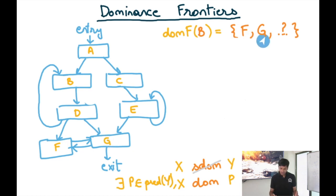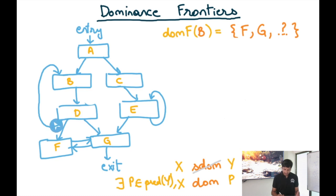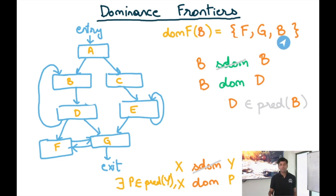Similarly, G is in the dominance frontier of B because there's a path to G from entry that does not go through B, so G is not strictly dominated by B, but its predecessor D is dominated by B. There's also one more node in the dominance frontier of B: B itself. B is not strictly dominated by itself by definition, but a predecessor of B, which is D, is dominated by B. So the dominance frontier of B is {F, G, B}.